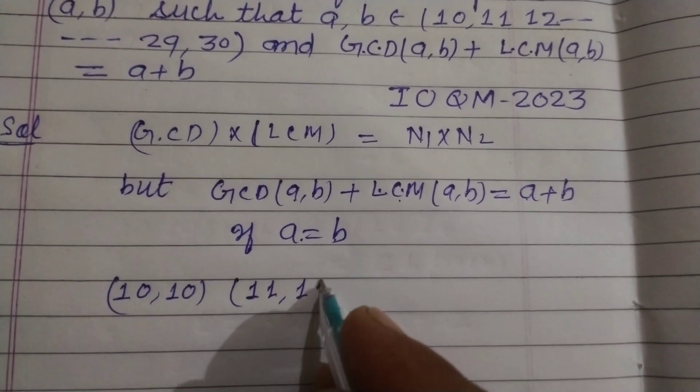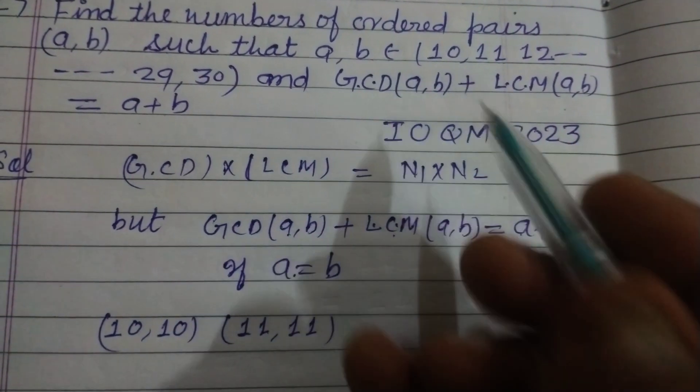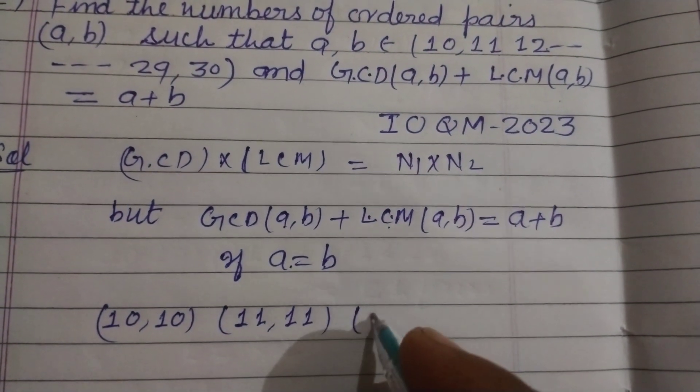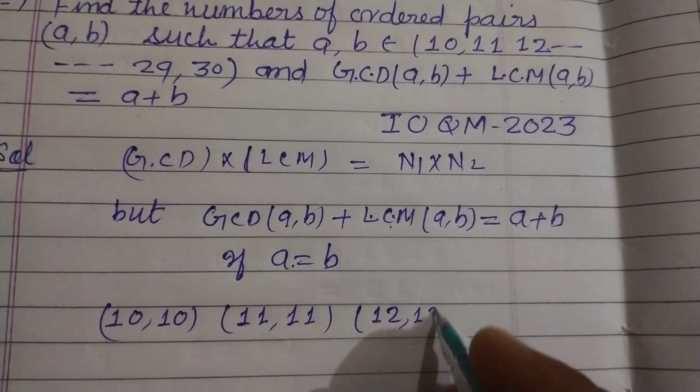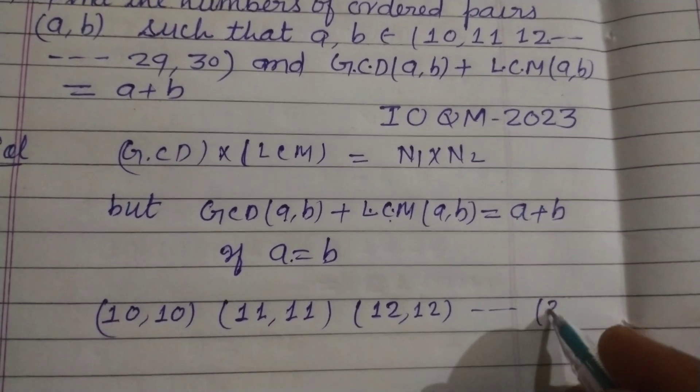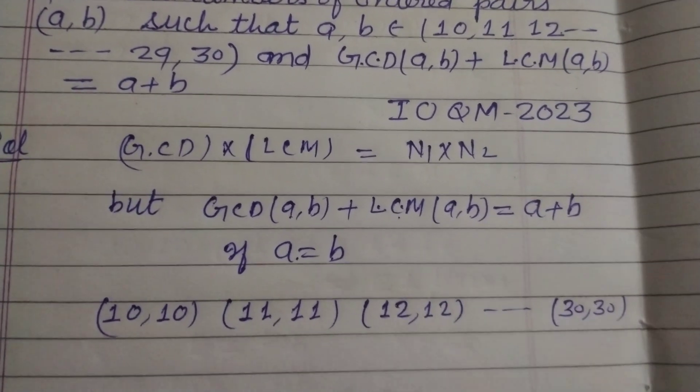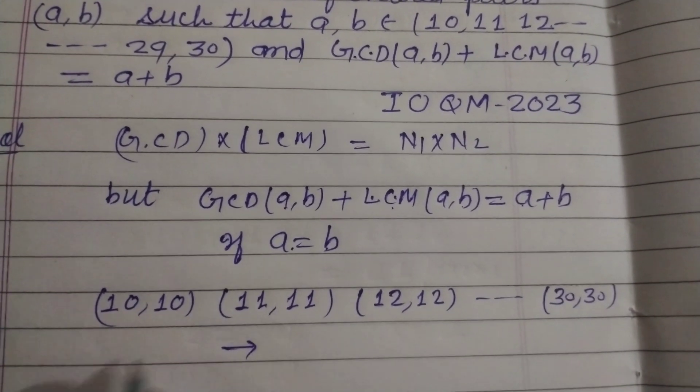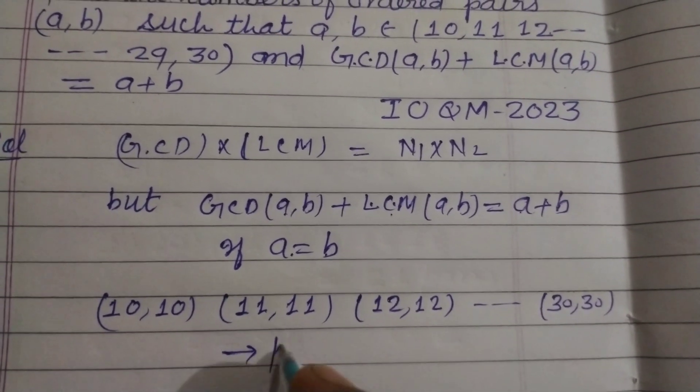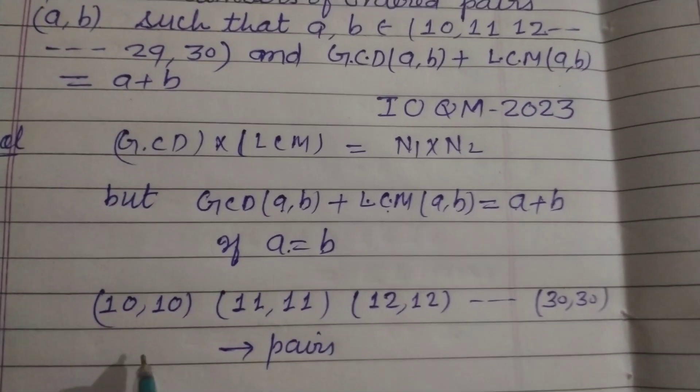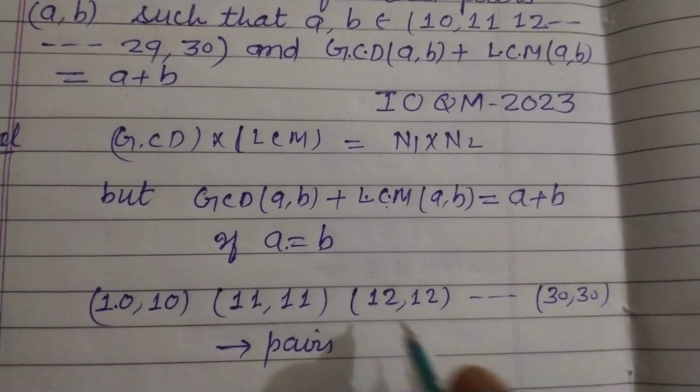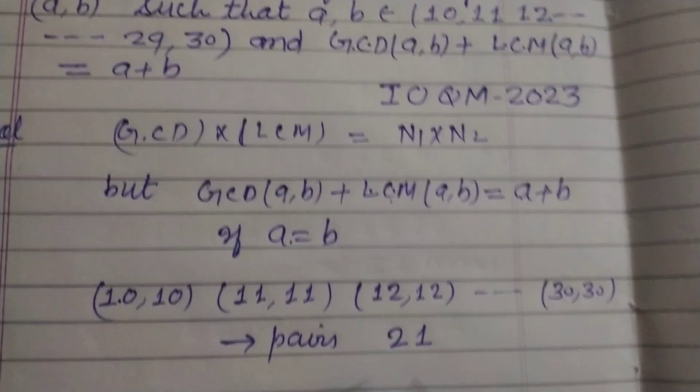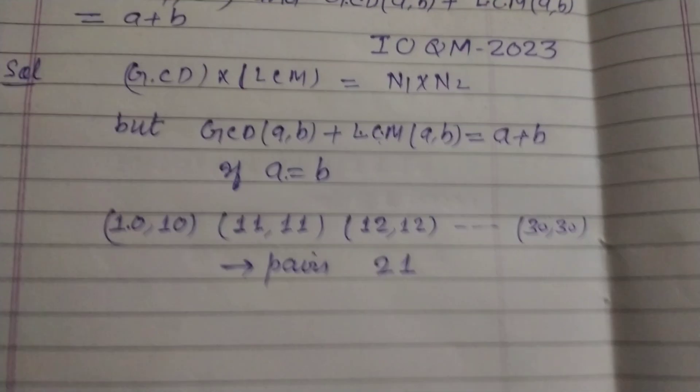(11, 11) from the given set, (12, 12), and so on, (30, 30). So the number of ordered pairs in this case from 10 to 30, there are 21 pairs.